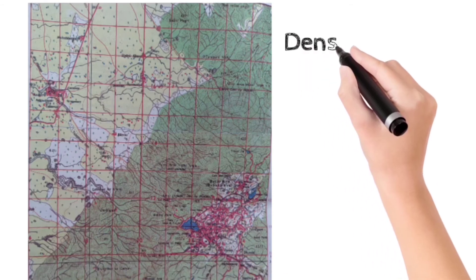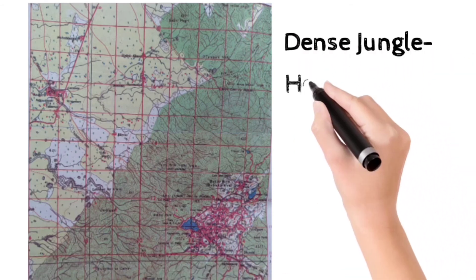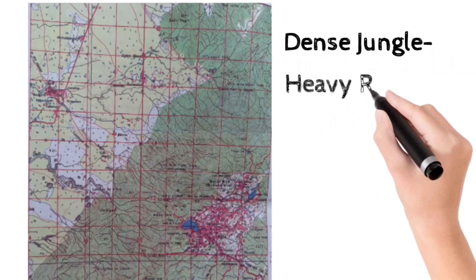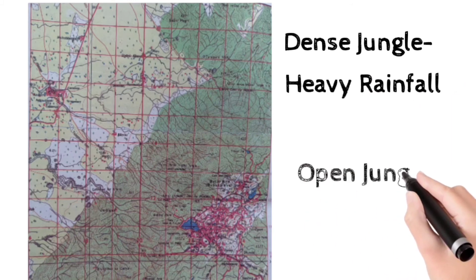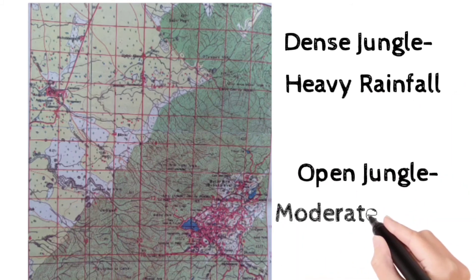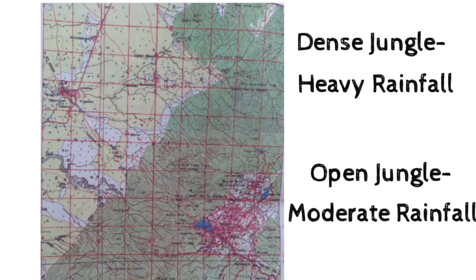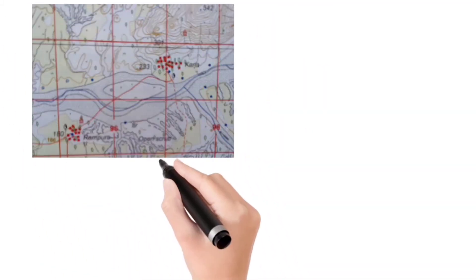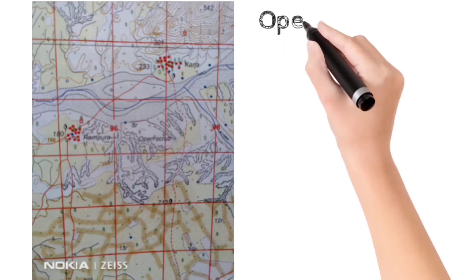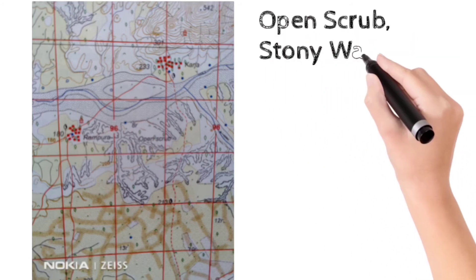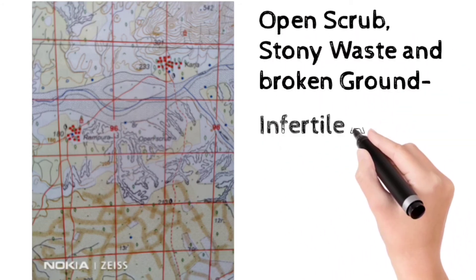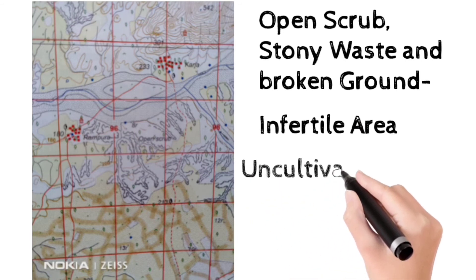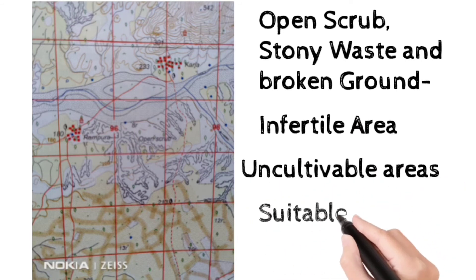Green is the color used to show the forest. Dense forest or 'jungle' written on the map indicates a region of heavy rainfall, whereas open jungle is indicative of moderate rainfall. Scattered scrubland and stony waste indicate desert conditions with poor soil. Such infertile areas would only be suitable for rearing goats, sheep, camels and horses.